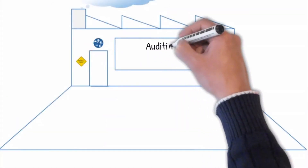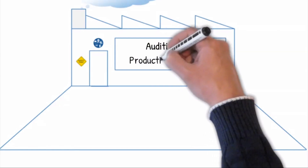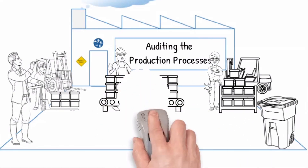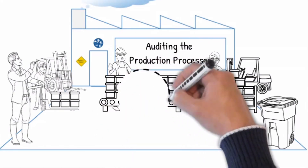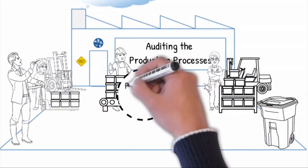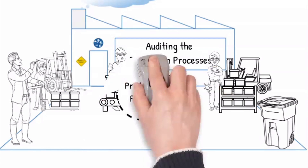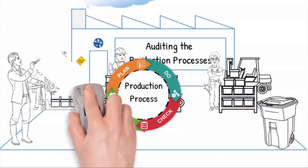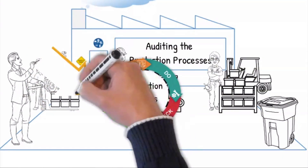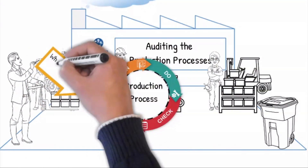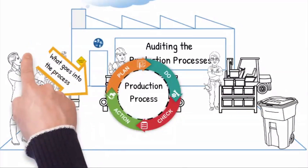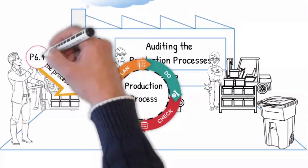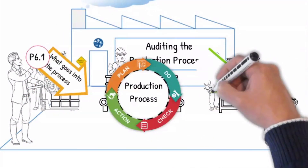In this tutorial we are going to share how to do a production process audit according to VDA 6.3, focusing on question P6.1 process inputs. We will assess how each process input is converted into the process output to meet the customer requirements.